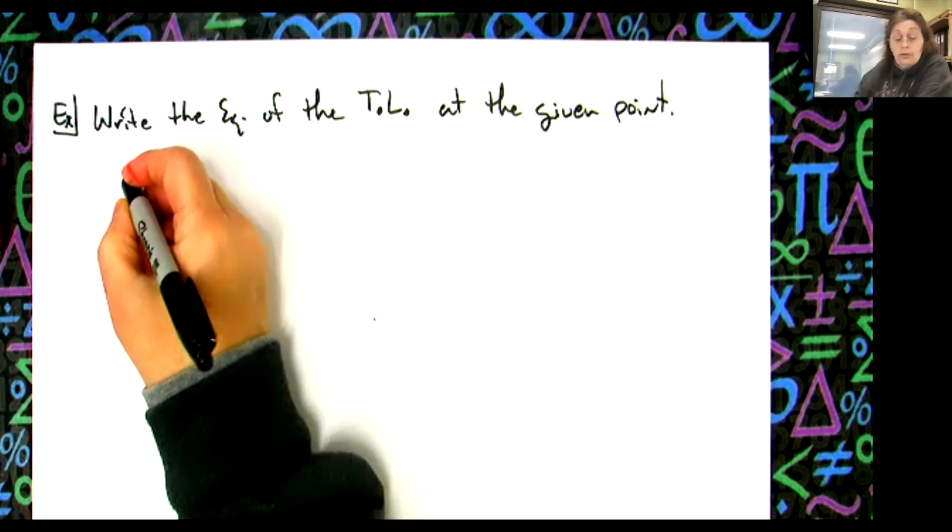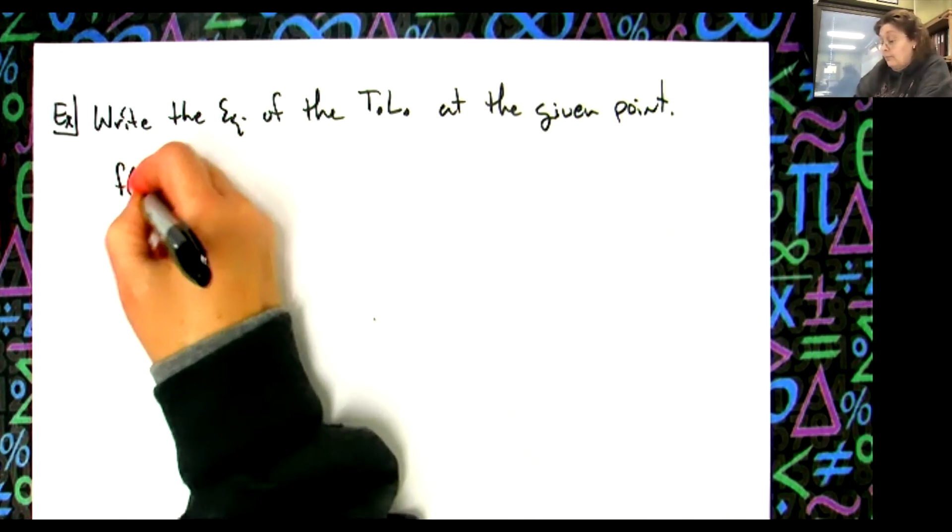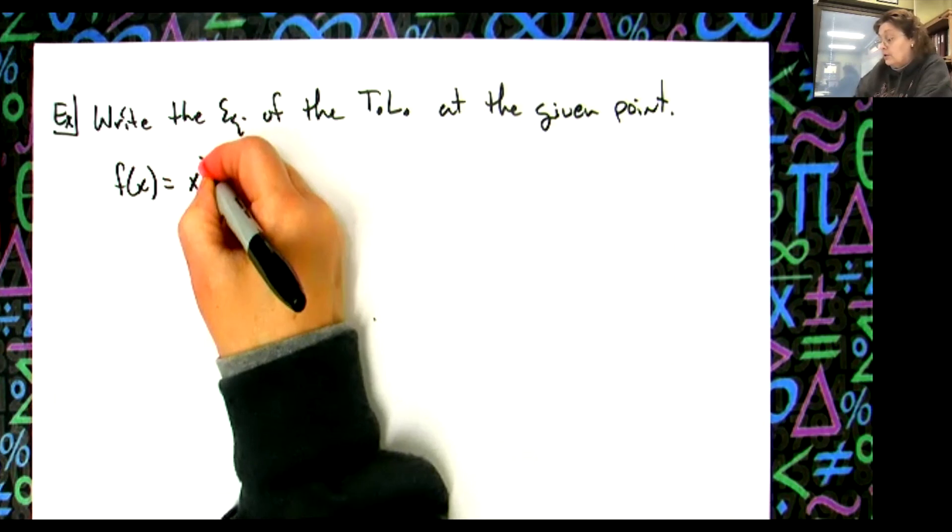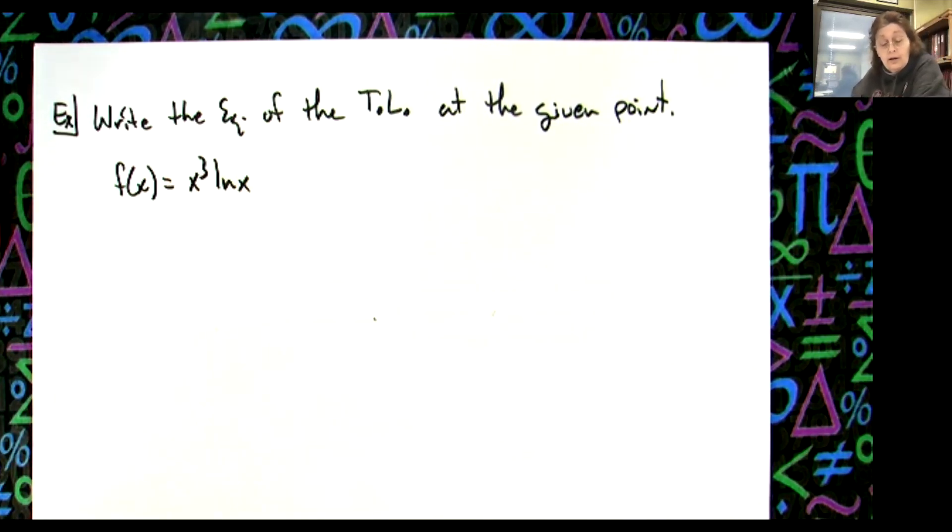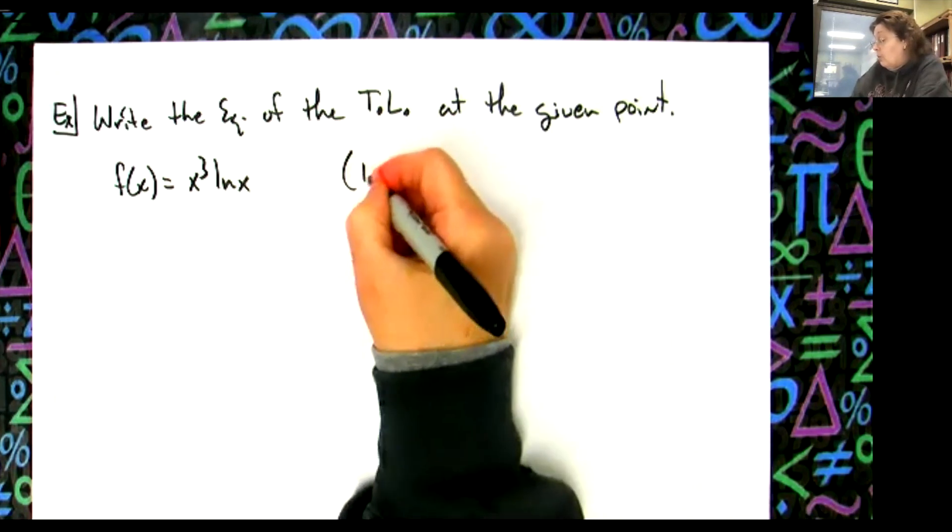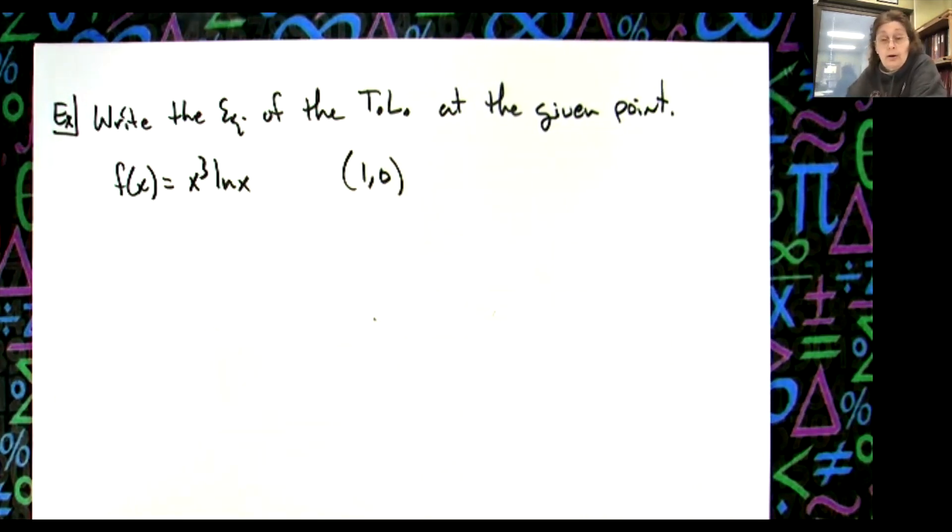Okay, so the function this time might be say f(x) is equal to maybe say x to the third natural log of x. So your functions now are going to have that natural log in there and then one zero is going to be your given point.